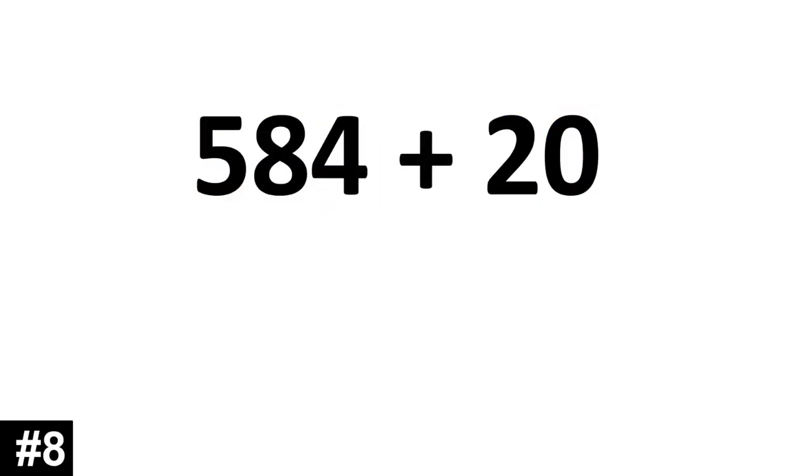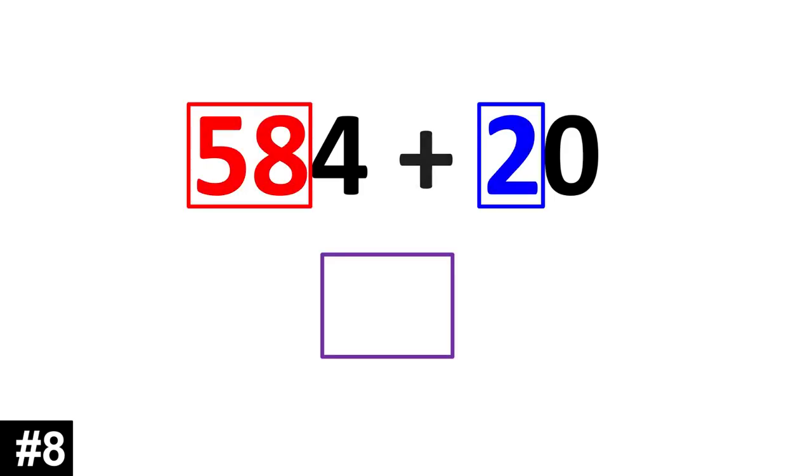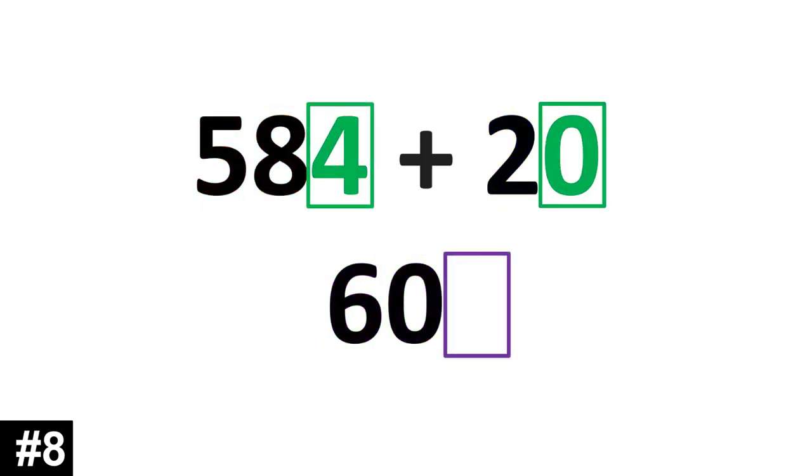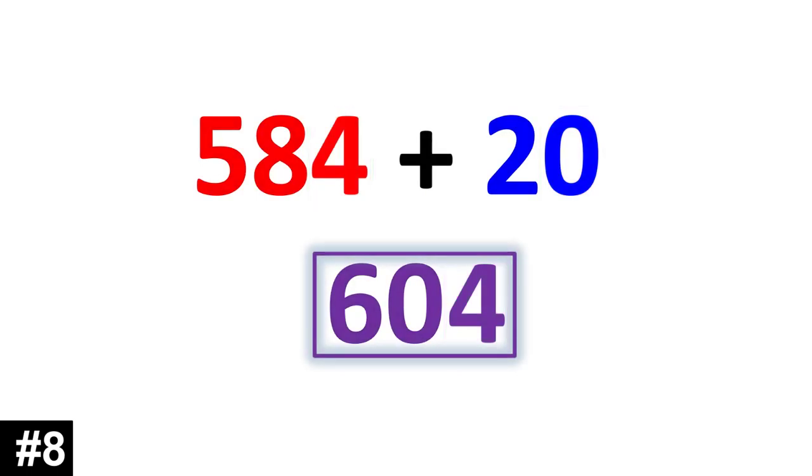How about 584 plus 20? We have 58 tens plus 2 tens. 58 plus 2 is 60. We look to the ones. 4 and 0 gives us 4. 604.